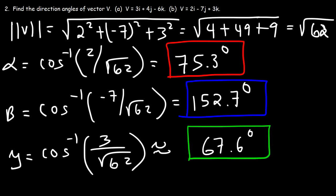And that's basically it. Now you know how to find the direction angles and direction cosines of a vector. Thanks for watching.